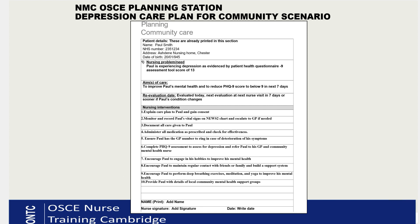Next is the aim of care — what you're trying to achieve. Remember the time period is the next seven days. The aim of care should be: to improve Paul's mental health and to reduce the PHQ-9 score to below 9 — moving one category down — within the next seven days.